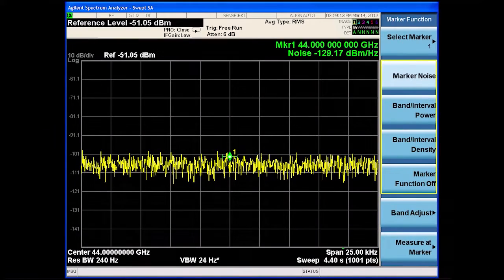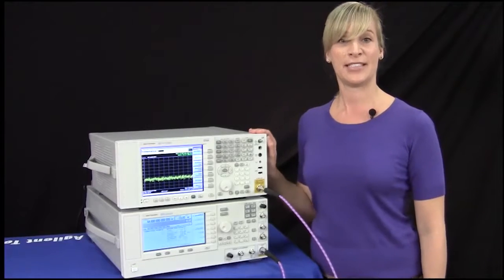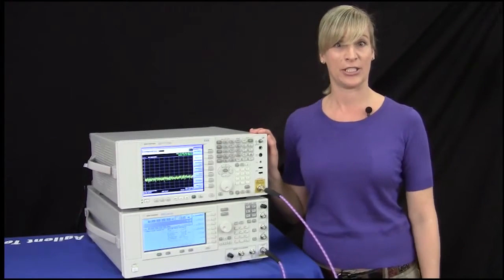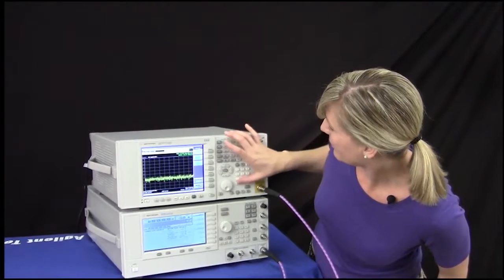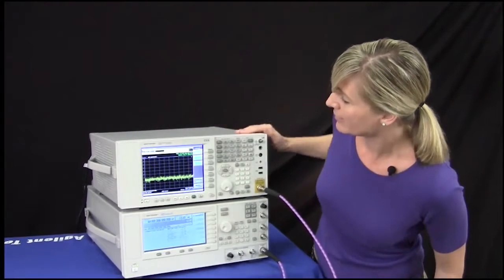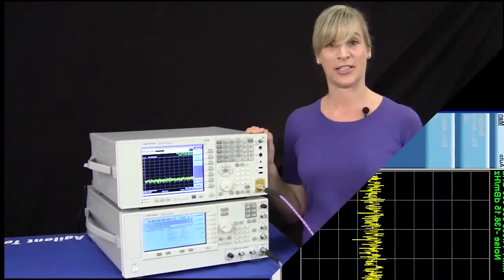As you can see, our noise floor performance is approximately negative 129 dBm per hertz. We can improve the sensitivity by setting our attenuation to 0 dB and this further improves the noise floor performance of the analyzer.